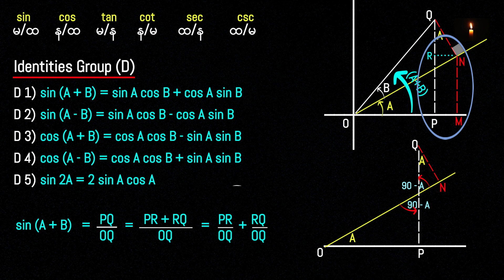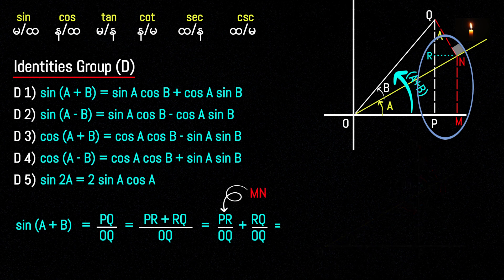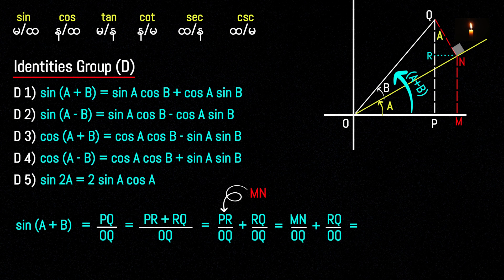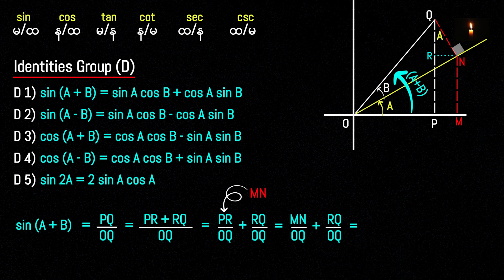So PRNM is the same as PQ. So MN divided by OQ plus RQ divided by OQ. I am here, ok?